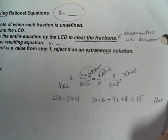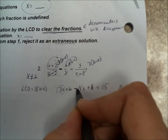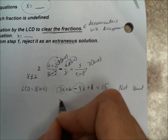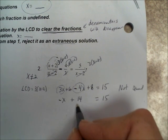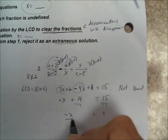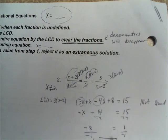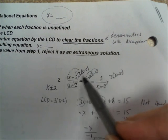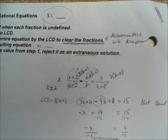This is not quadratic, so we don't have to set it equal to 0. All we do is combine like terms. 3x minus 4x on the same side is negative x. 6 plus 8 is 14. And that's equal to 15. Subtract 14 from each side and we get negative x equals 1. Divide both sides by negative 1: x equals negative 1. It's not equal to 2, so it must not be extraneous. To check, plug in negative 1 for x and verify the equation holds.